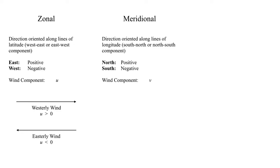Another component is the meridional component, which is oriented parallel to lines of constant longitude — going towards the north or towards the south. By convention, going north is defined as a positive value in the meridional direction, towards more positive values of the meridional axis, which is analogous to the y-axis of a standard Cartesian grid. Going south corresponds to negative values. The symbol we use to denote wind along the meridional axis is lowercase v, so u is east-west and v is north-south.